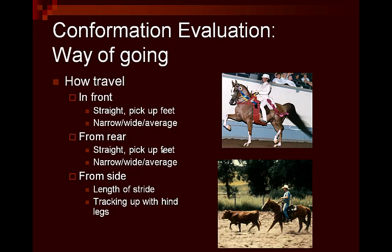With what we've been doing here we can't do a very good job of evaluating travel and way of going, but that is another area we evaluate when looking at the conformation of horses. It's important to look at them coming toward you, going away from you, and also from the side. From the front and behind, we're going to be able to really look at how straight they travel, whether they pick up their feet correctly, and whether they're narrow, wide, or average. From behind, we can watch how they move up at the point of their hip and get some ideas to make sure the horses are sound. From the side, you get a good evaluation of length of stride, how they walk out with their shoulders, and track up behind with their hocks — a predictor of how they might ride.